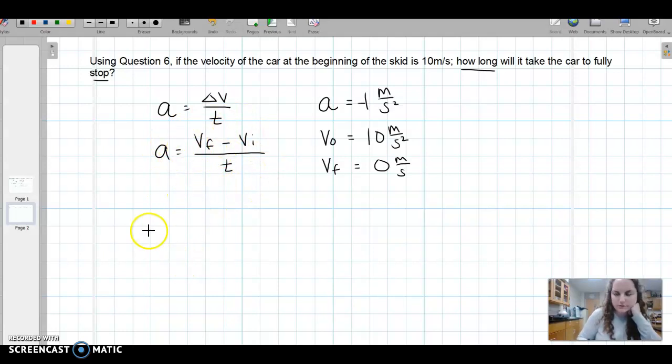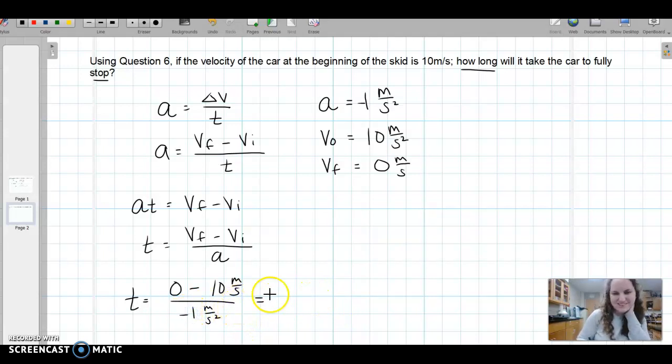In order to solve for our time we need to rearrange our equation. Let's pull over this t and divide out this a, so that we have that the change in velocity all over acceleration is equal to your time. Now we can plug in our information. So t is equal to our final velocity which is zero minus our initial velocity which was 10 meters per second, all over negative one meter per second squared. So we get that the time was 10 seconds.